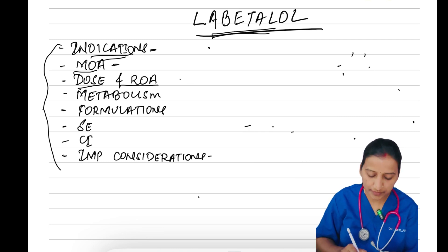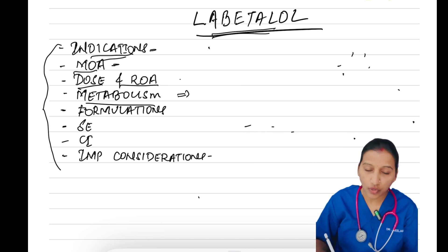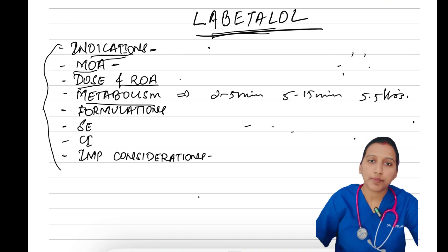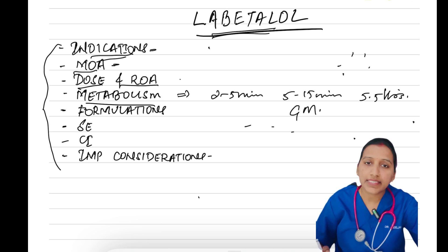Coming to metabolism, after IV injection, onset of action is 2 to 5 minutes with peak action at 5 to 15 minutes and a half-life of 5.5 hours. Metabolism is mainly through conjugation to glucuronide metabolites excreted in urine and via bile into feces.